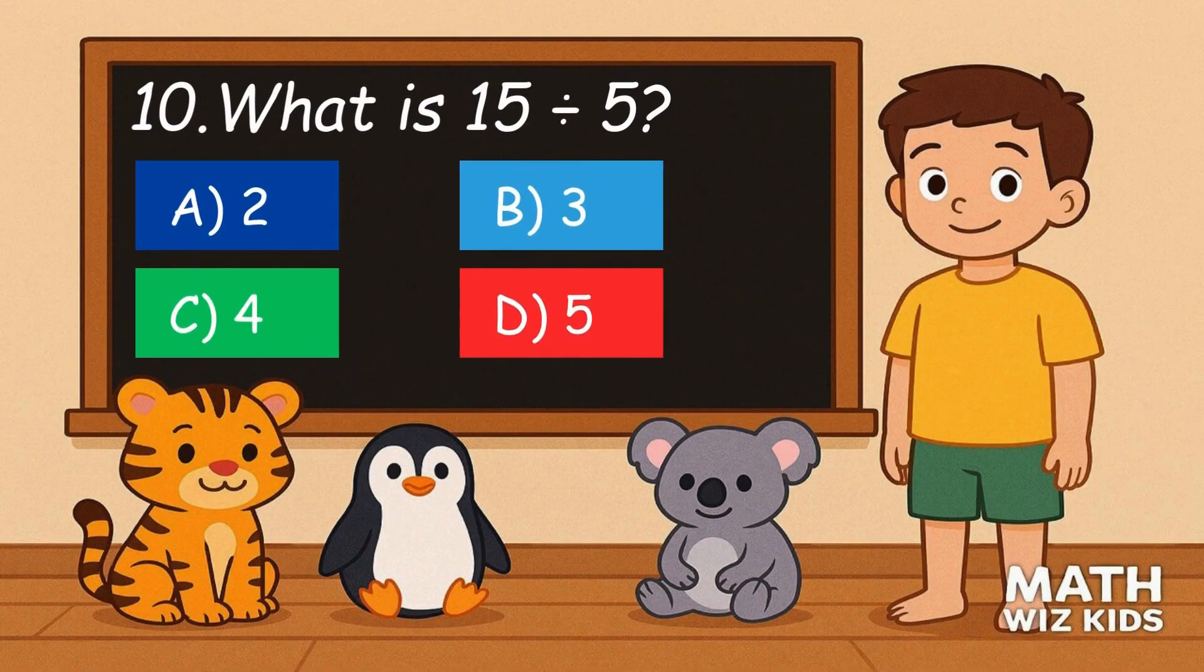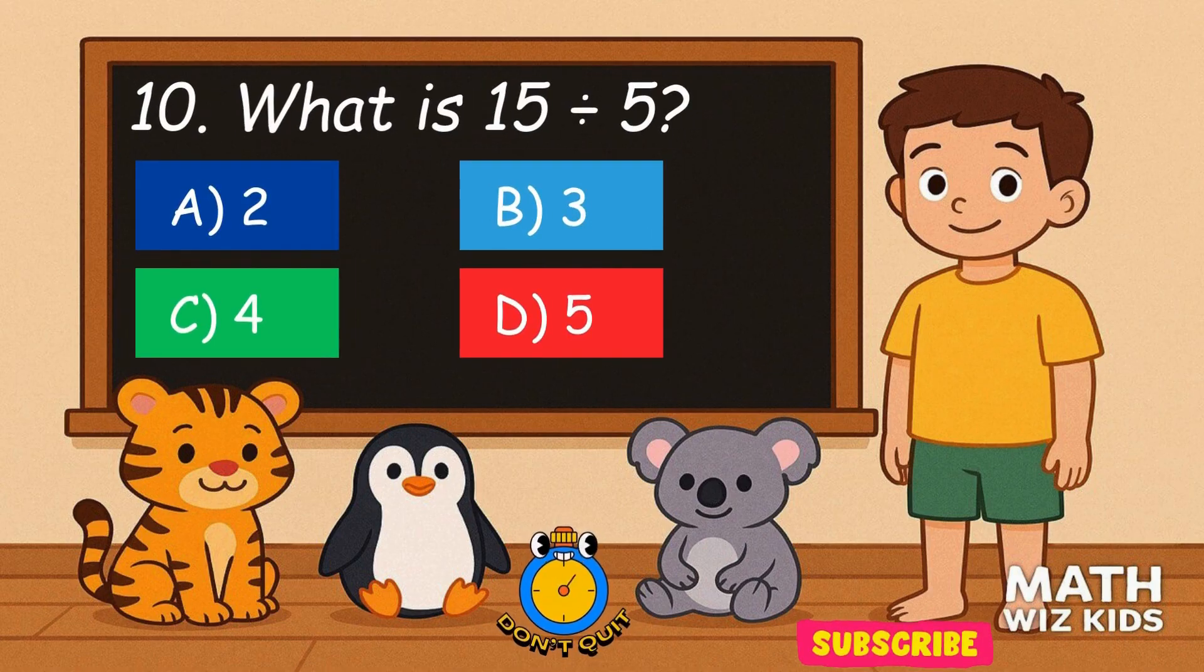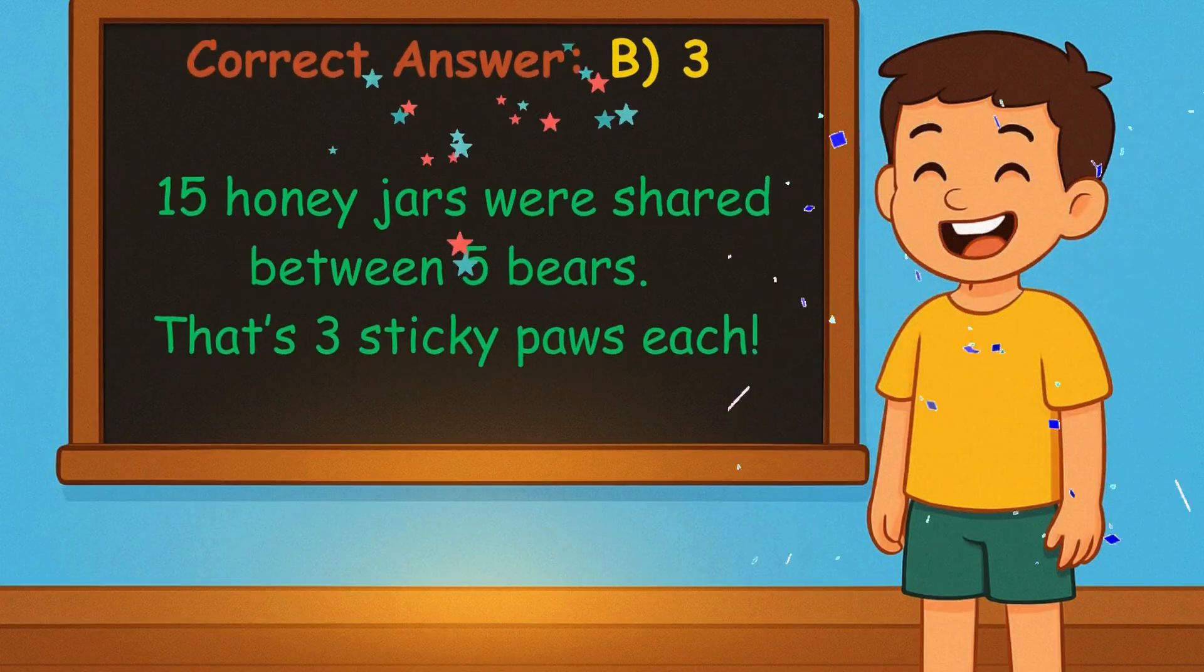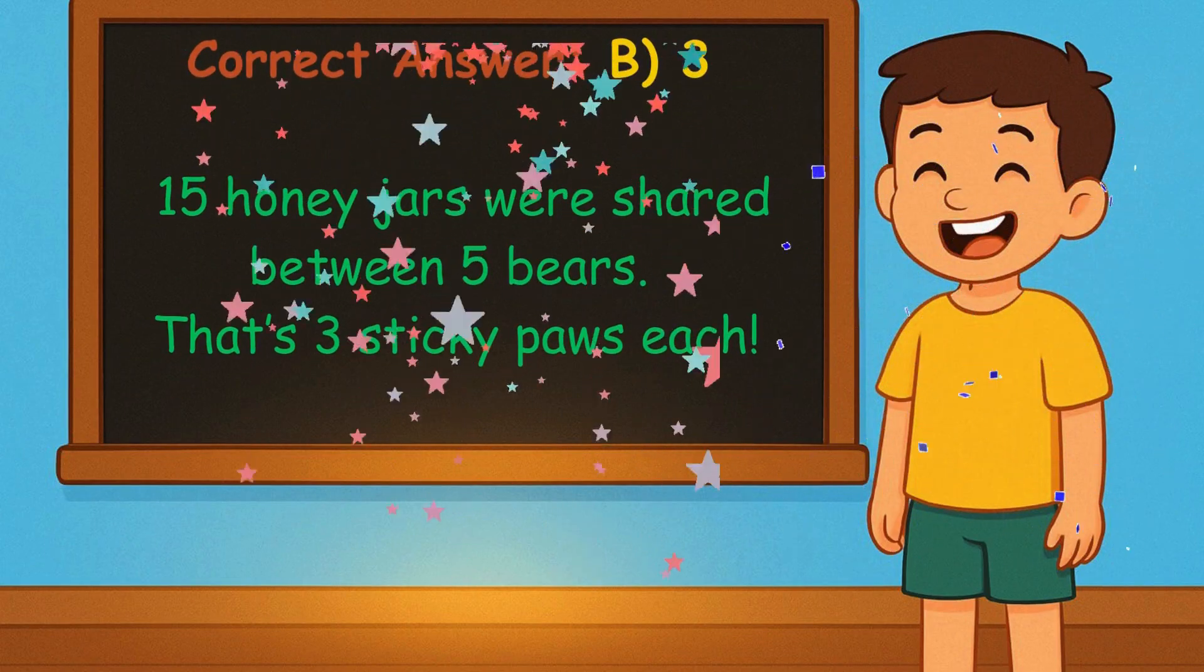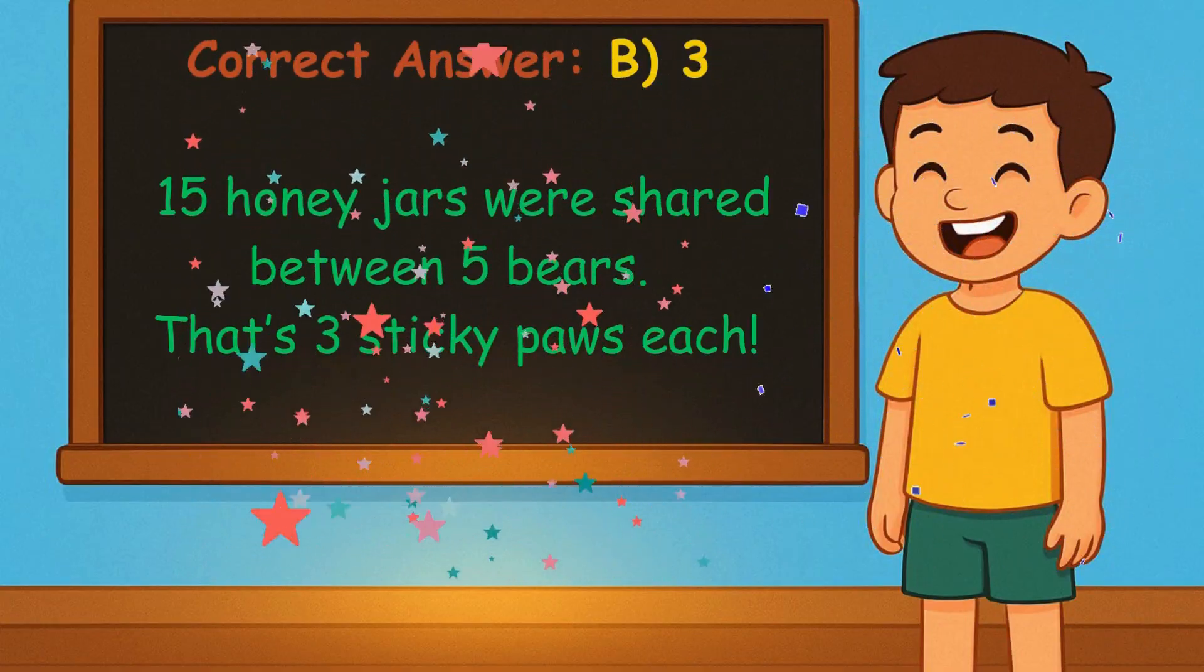10. What is 15 divided by 5? Is it A, 2, B, 3, C, 4, or D, 5? Correct answer is 3. 15 honey jars were shared between five bears. That's three sticky paws each.